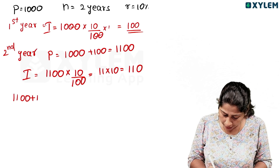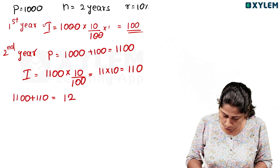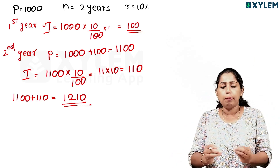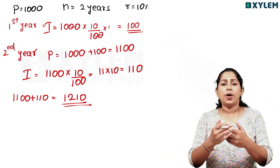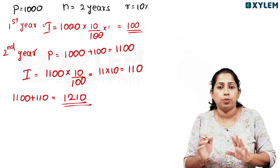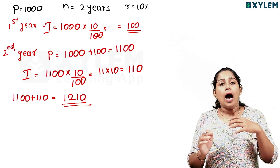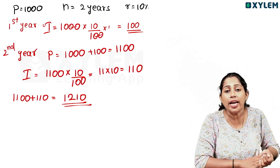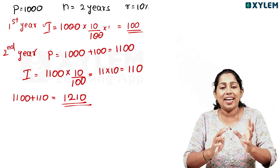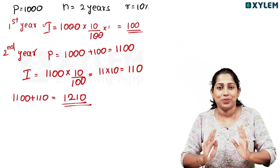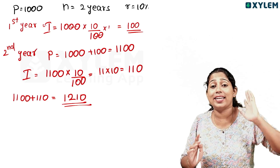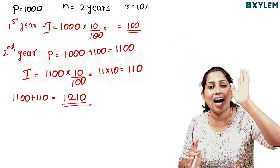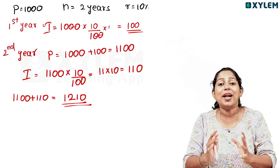So the total amount after 2 years is 1100 plus 110 equals Rs. 1210. This is how we calculate compound interest year by year. You can also go to the bank and this is how the bank calculates compound interest.